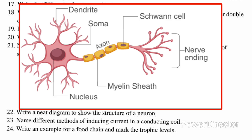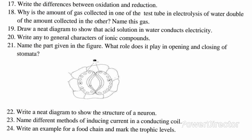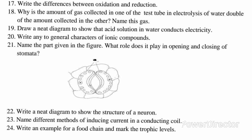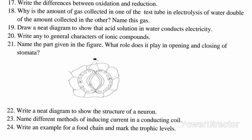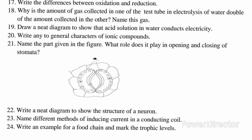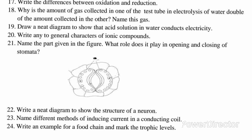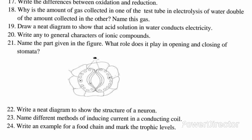Question 23: Name different methods of inducing current in a conducting coil. Answer: Moving a magnet in a stationary coil; moving a coil keeping a magnet stationary. Question 24: Write an example for a food chain and mark the trophic levels. Answer: Grass → Grasshopper → Frog → Snake → Eagle.